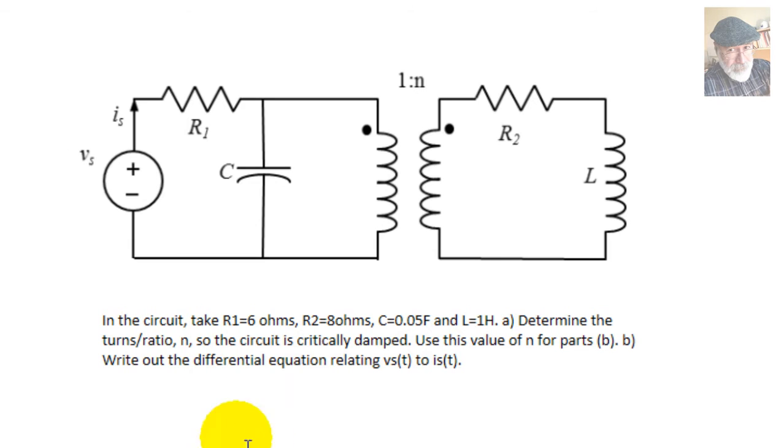In the circuit, the resistor R1 is 6 ohms, R2 on the right is 8 ohms, the capacitor is 0.05 Farads, and the inductor 1 henry.